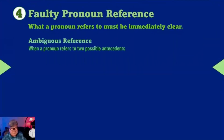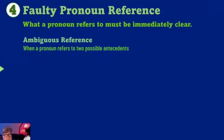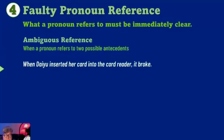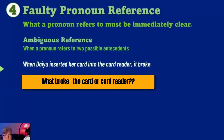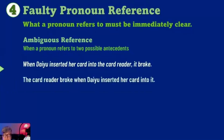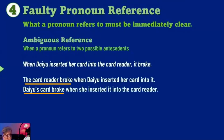Here are some examples. The first one is ambiguous reference. That's when a pronoun refers to two possible antecedents, therefore making your reader guess or simply give up, saying 'I don't know which is meant.' When Dayu inserted her card into the card reader, it broke. What broke — the card or the card reader? So let's revise that to clarify which is meant: the card reader broke, or Dayu's card broke.